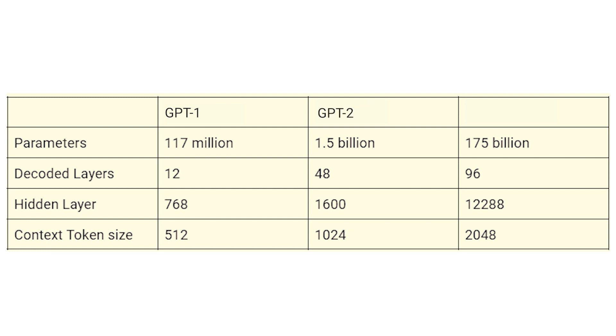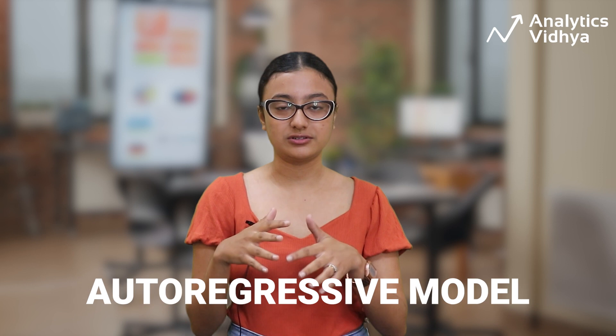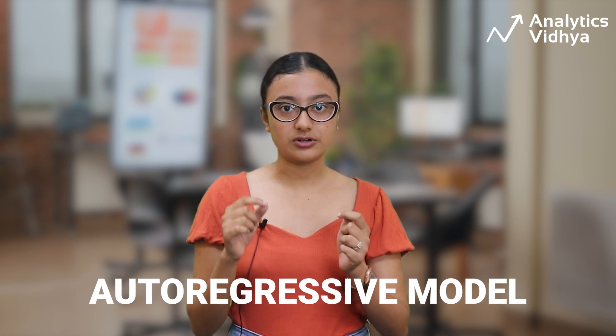OpenAI released three different versions of GPT — GPT-1, GPT-2, and GPT-3 — to make more human-like conversations. Each version was trained by scaling up the data and parameters. GPT-3 is referred to as an auto-regressive model, meaning it uses only past values to make predictions. GPT-3 can be used to develop large applications like search engines and content creation.